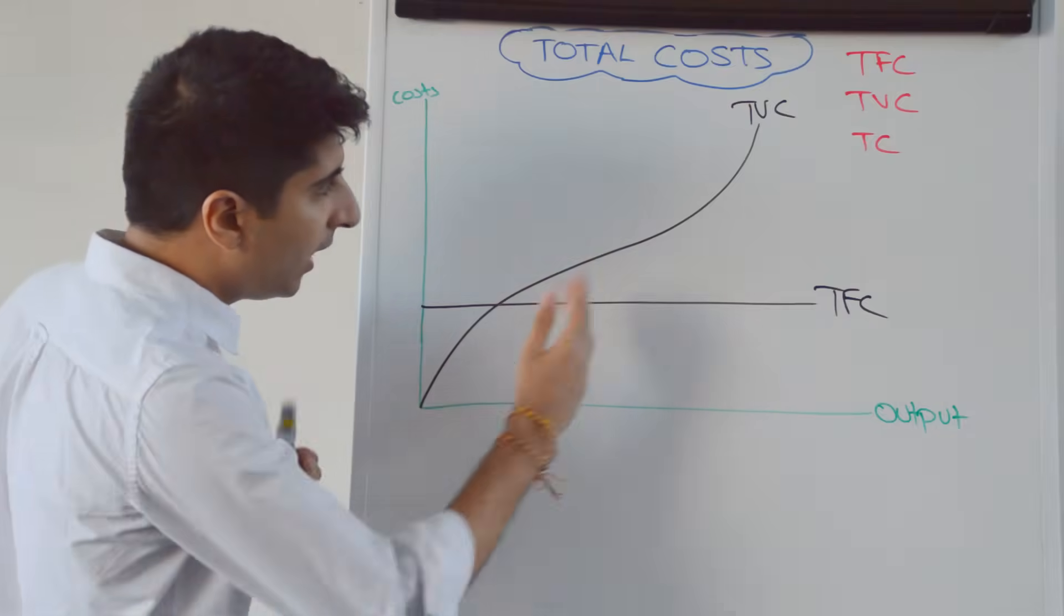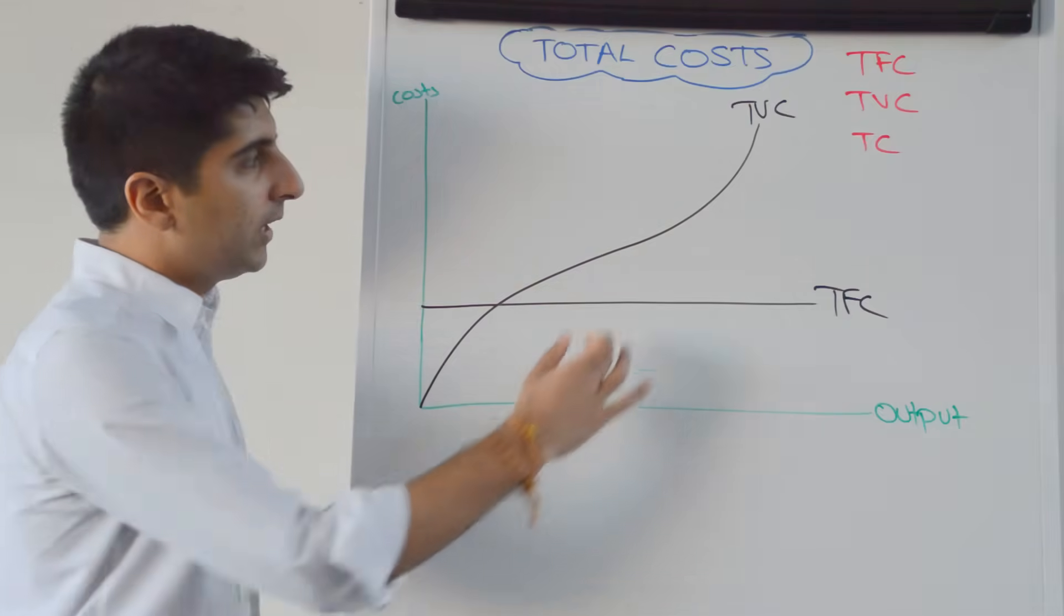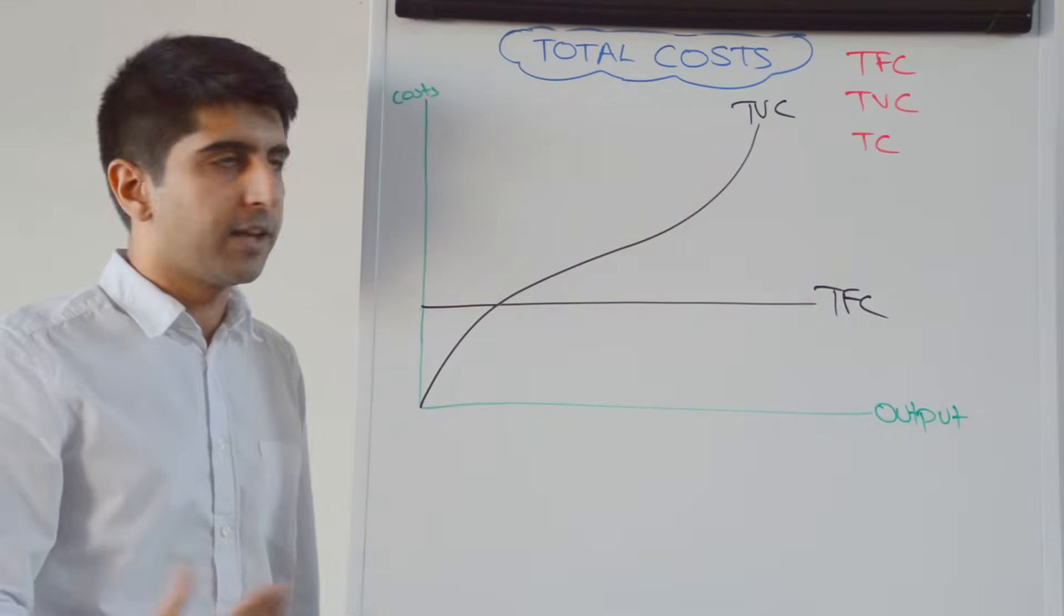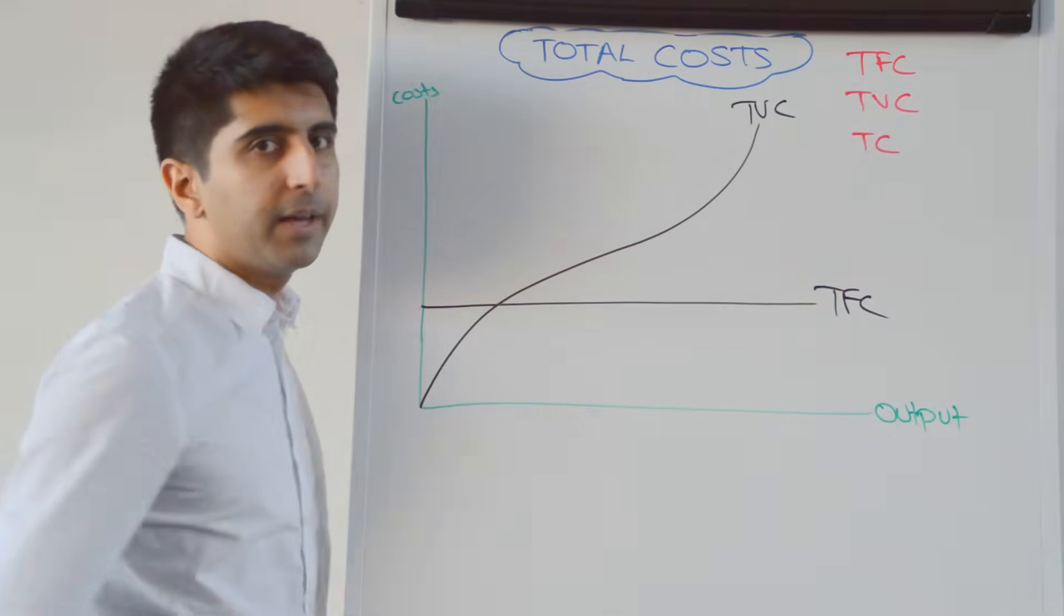So, what we have initially, up until this point here, is increasing returns to labor, and then the law of diminishing returns set in, and we see decreasing returns to labor, falling productivity, hence why the curve becomes much steeper thereafter.